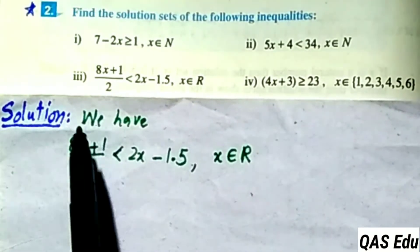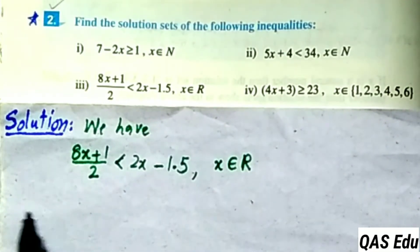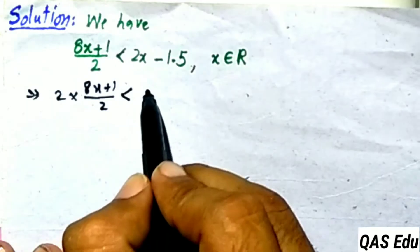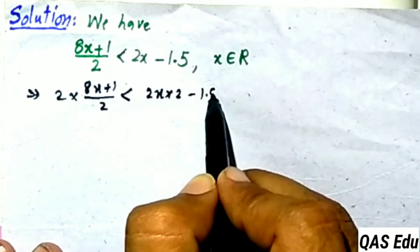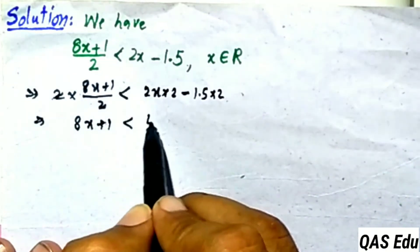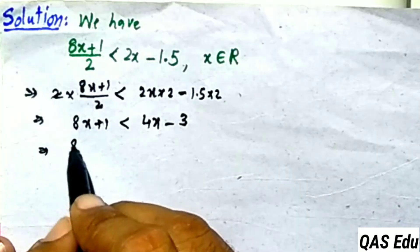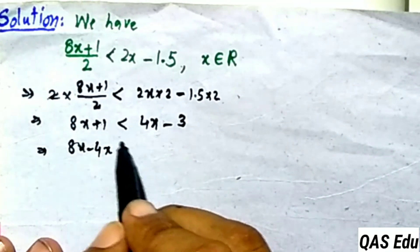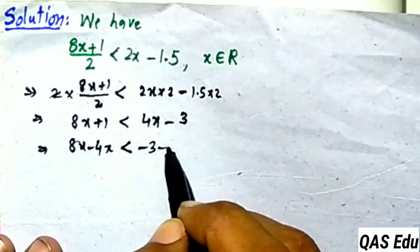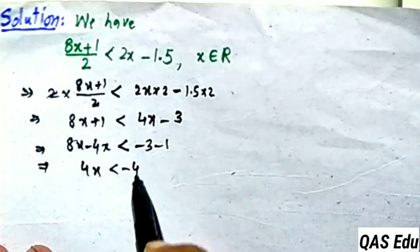Part 3: The restriction is x belongs to real numbers. To solve this inequality, we multiply both sides by the LCM to clear fractions. After multiplying: 8x plus 1 is less than 4x minus 3. Bringing 4x to the left and 1 to the right gives: 8x minus 4x is less than minus 3 minus 1, so 4x is less than minus 4.